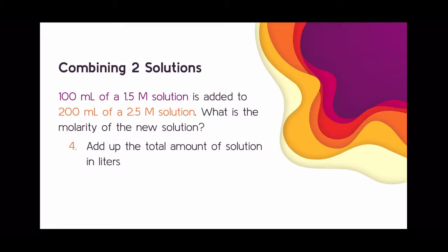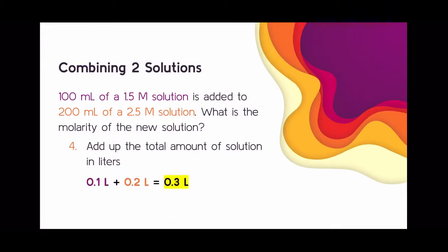The next step is to add up the total amount of solution in liters. Take the volumes you got in step one when you converted milliliters to liters, and add them together. Adding 0.1 liters and 0.2 liters gives a total volume of 0.3 liters. I highlighted this in yellow as well because you'll need this number in the next step.